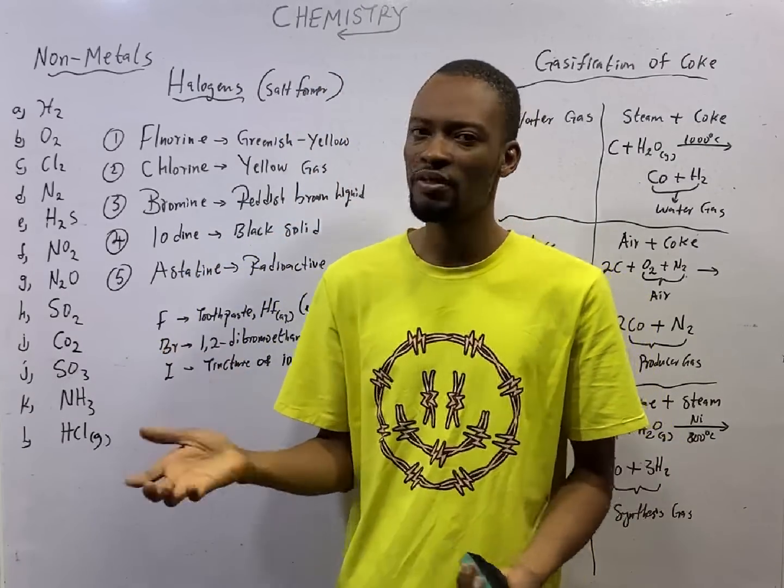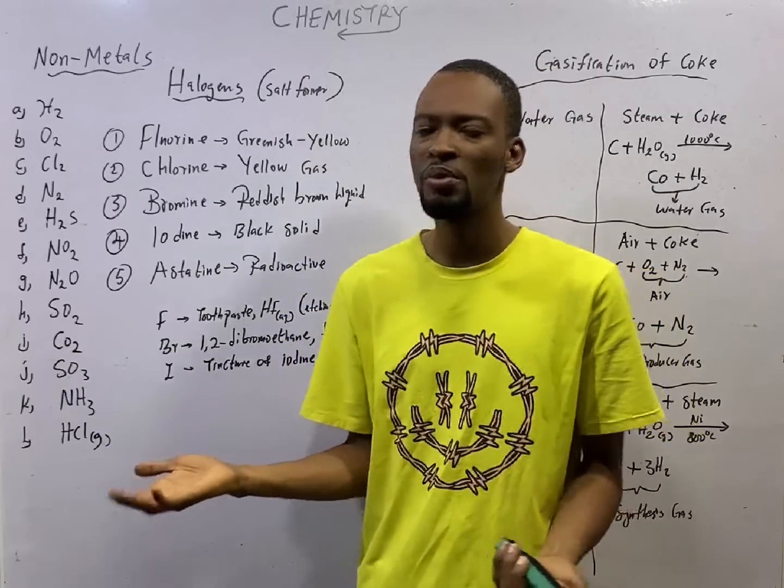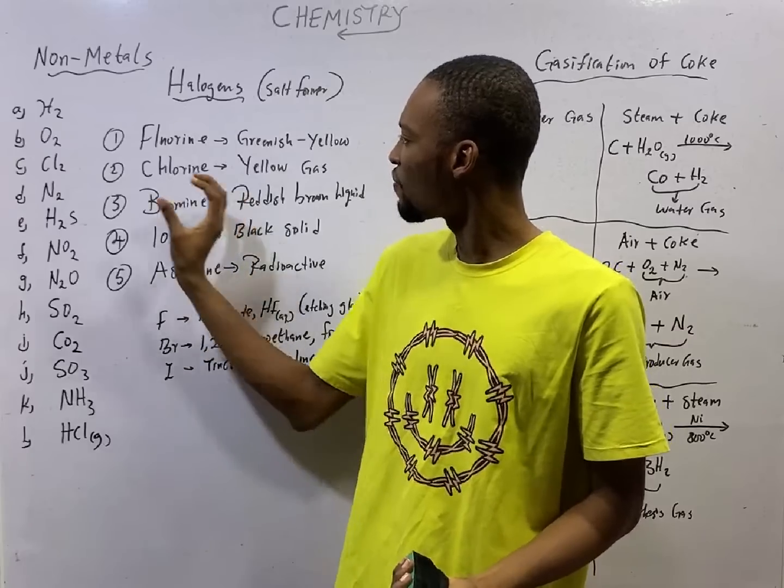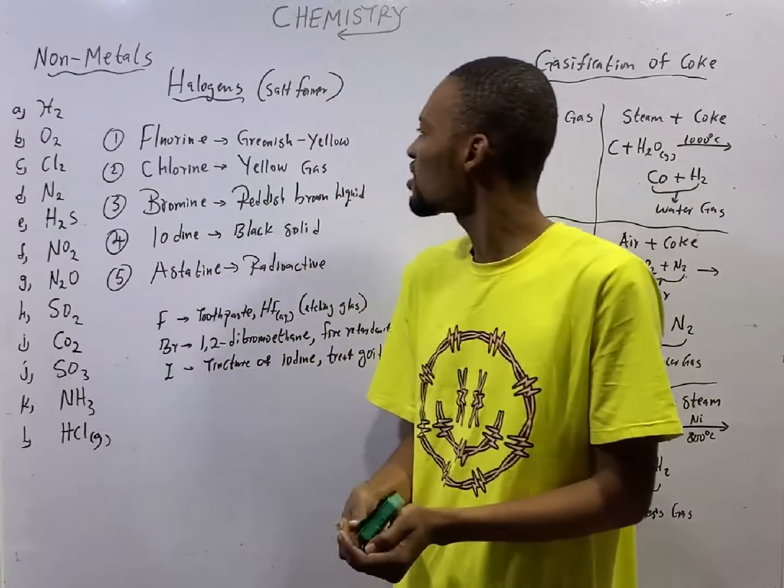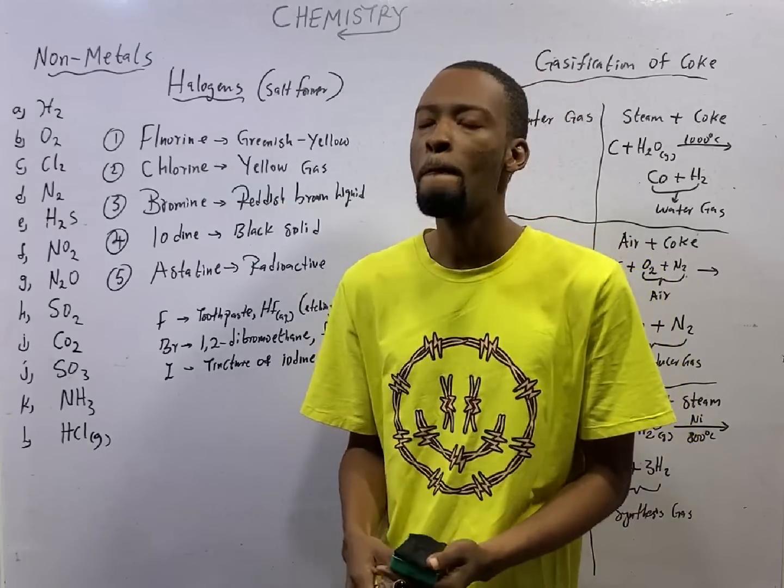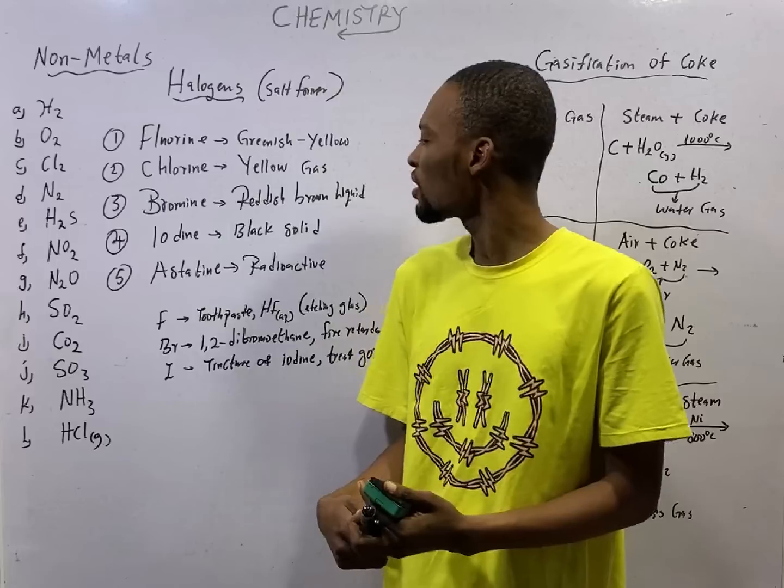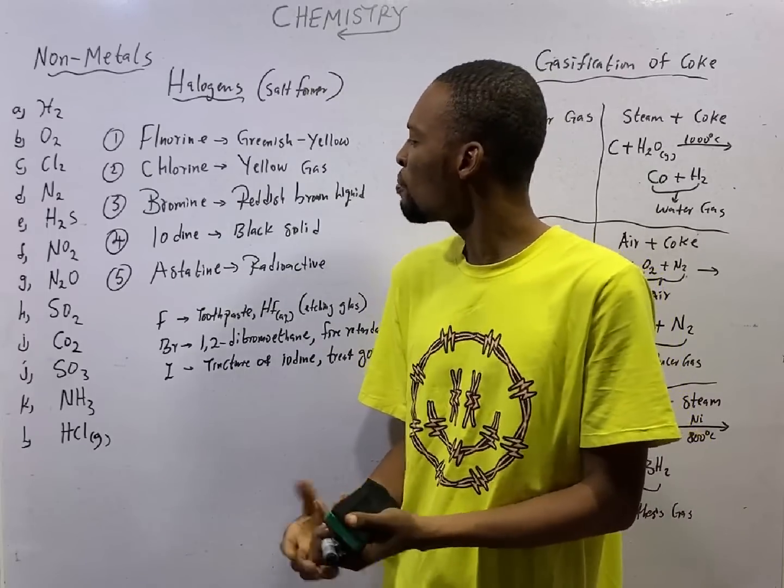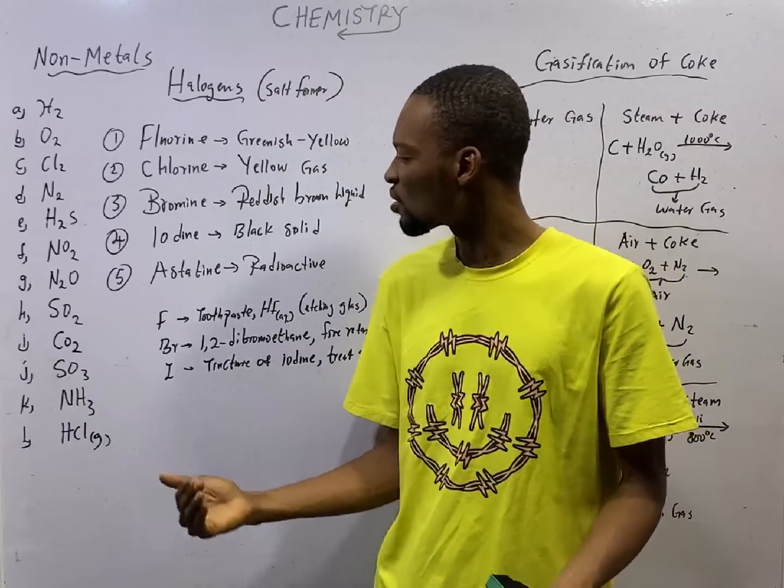Halogens are a group 7 family. They need one electron in the outer shell. And here are the physical properties of halogens: Fluorine is greenish-yellow, chlorine is yellow gas, bromine is reddish-brown liquid, iodine is black solid, while astatine is a radioactive element.